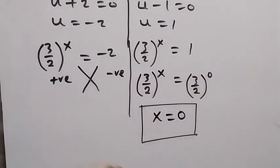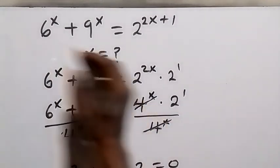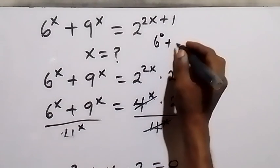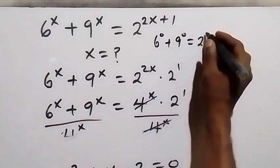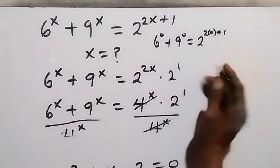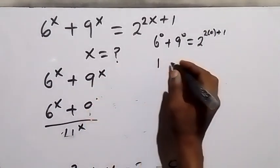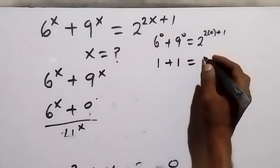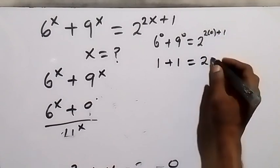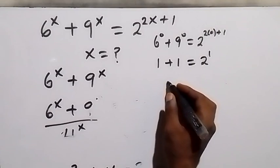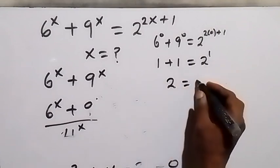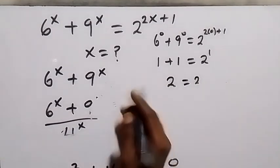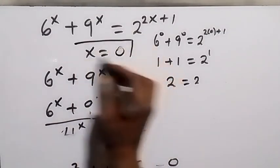The solution to this problem is x equals 0. We can confirm this by substituting x equals 0 into the original equation: 6 raised to power 0 plus 9 raised to power 0 equals 2 raised to power (2 times 0 plus 1). This gives 1 plus 1 equals 2 raised to power 1, which is 2 equals 2. Left-hand side equals right-hand side, confirming x equals 0 is the solution.